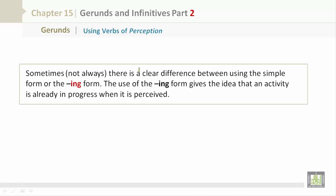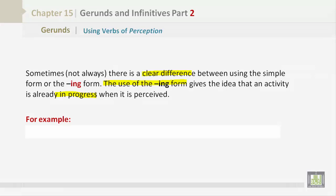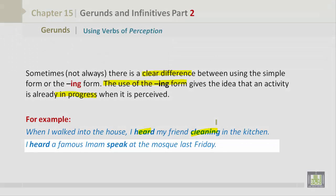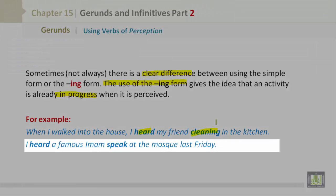Sometimes, not always, there is a clear difference between using the simple form or the -ing form. The use of the -ing form gives the idea that activity is already in progress when it is perceived. Let's take a look at a few examples. For example, when I walked into the house, I heard my friend cleaning in the kitchen. I heard a famous imam speak at the mosque last Friday.